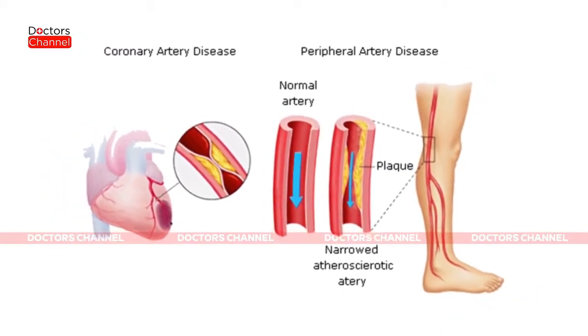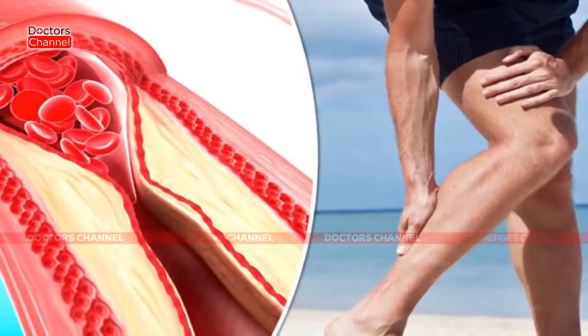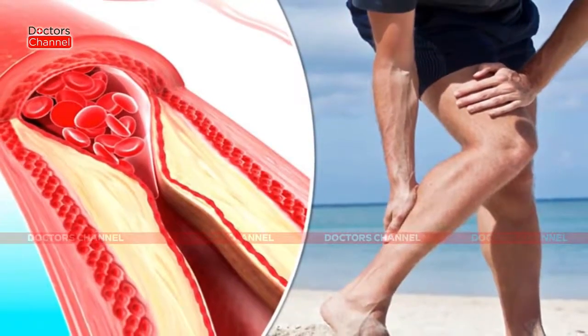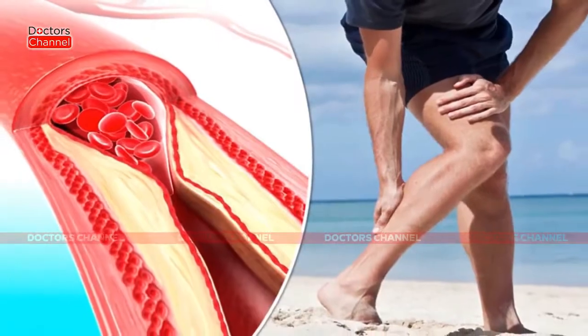This blockage causes reduced blood supply to the legs. Symptoms include discoloration, inability to walk for longer distances due to pain, and wounds or even minor injuries that won't heal — all because of the reduced blood supply in peripheral arterial disease.